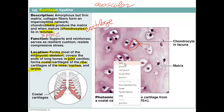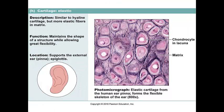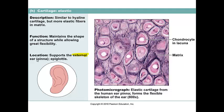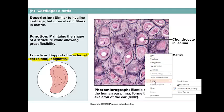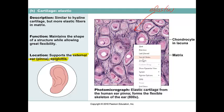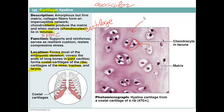The next example of cartilage is elastic cartilage, found in places where there is much more flexibility. The examples to know are the external ear and the epiglottis — areas that need to bend very quickly. On this slide you can see an abundance of elastic fibers, the very thin fibers representing elastin, which is very flexible. The chondrocyte in the lacuna is much larger than in the hyaline cartilage example, where the matrix has more of a glassy or amorphous appearance.